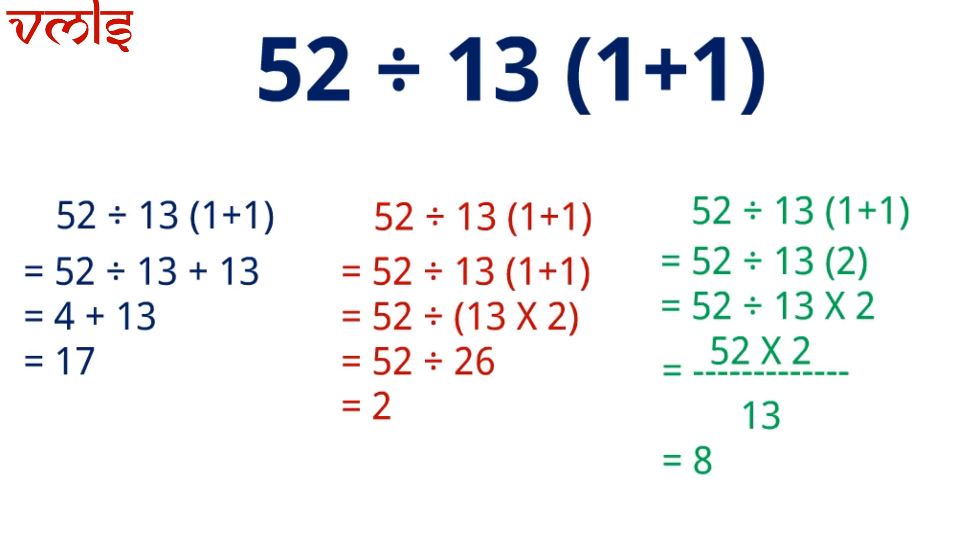Now which is correct? Let's discuss. In the first method, when I solved this bracket, I multiplied 13 with 1 and 13 with 1. So while solving the bracket, I actually did two operations: one, I removed the bracket, and second, I did multiplication. But there was division also given, and I am multiplying it before division, so that's where I am not following the rule of BODMAS. So this one is wrong. Those who got answer 17, it's wrong.